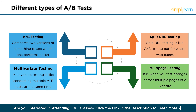The last type is multi-page testing. Multi-page testing is when you test changes across multiple pages of a website to see the overall effect on a visitor's journey or actions. For instance, if you're redesigning your online store, you might test how changes to the home page, product pages, and checkout process together influence the number of purchases. It's about understanding how changes on multiple pages impact user behavior and conversions.